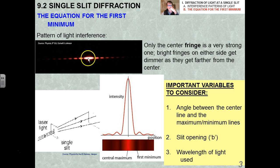So the same patterns hold for water, as for light, as for any other kind of wave. So this is really cool sort of universal stuff here. So I'm going to derive for you the equation for the first minimum. Now remember what the image looks like. Only the center fringe is a very strong fringe, a very bright one. The bright fringes on either side get dimmer as they get farther away from the center. The important variables to consider: number one was the angle between the center line and the maximum-minimum lines.